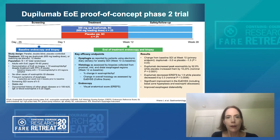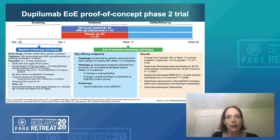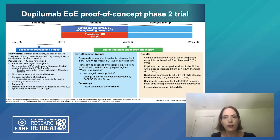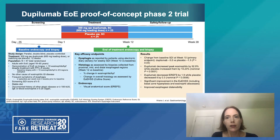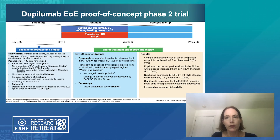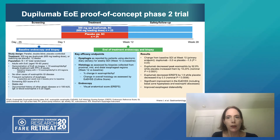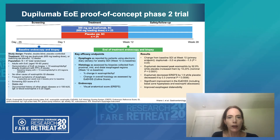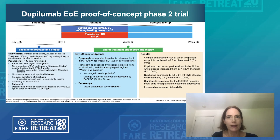Peak eosinophil counts of greater than or equal to 15 eosinophils per high-power field were required, indicated on esophageal biopsies from at least two of three esophageal sites. Patients were required to have at least two episodes of dysphagia per week for four weeks prior to screening, and the Straumann Dysphagia Instrument score of at least five out of nine was required at both screening and baseline. All patients were also required to have at least one other type 2 comorbid atopic disease.